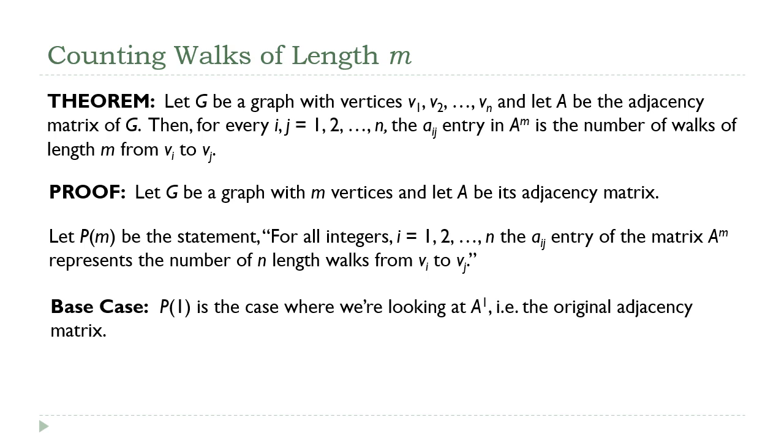So the base case, P(1), this one is really kind of trivial. A to the 1st is just the original adjacency matrix. And each element of the adjacency matrix tells me how many single edges there are connecting each pair of vertices. Well, a single edge is a walk of length 1. So we get that one kind of by default.